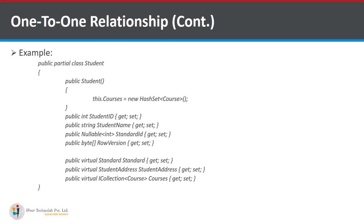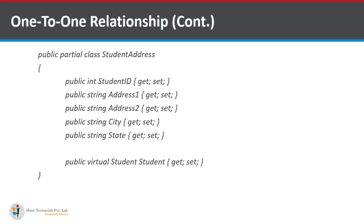In the example, the public partial class Student has a constructor and public properties: StudentID, StudentName, StandardID, and RowVersion. A virtual Standard property gives the relationship between Student and Standard. StudentAddress and ICollection for courses are also included. In the public partial class StudentAddress the fields are: StudentID, Address1, Address2, City, and State.